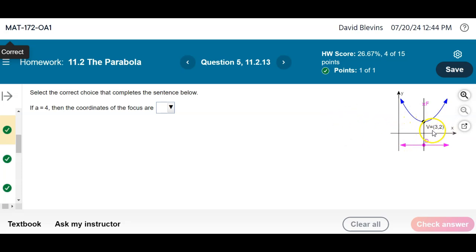we identify the vertex. It's pointed right there at it, so three, two is my vertex. And then it says if A is four, what's your focus?